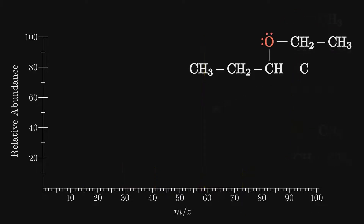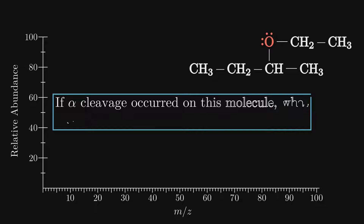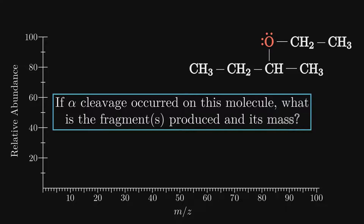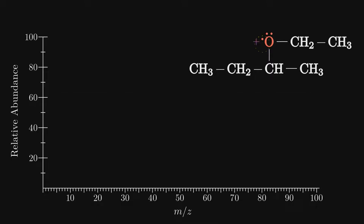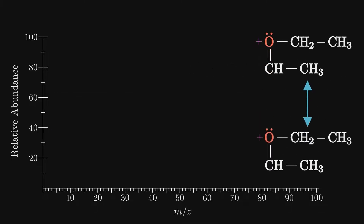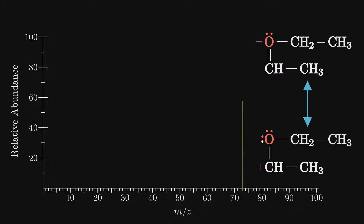Keep in mind that this is a fragmentation pattern, so for 2-ethoxybutane, if alpha cleavage occurred, what are the fragments and where would the peak be? Hopefully you remembered resonance and drew both structures. For mass it doesn't matter, as both structures have mass 73.